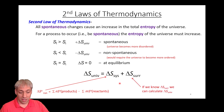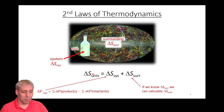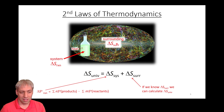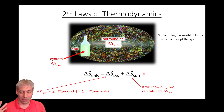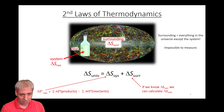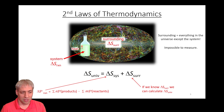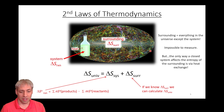Delta S of the surroundings gets more complicated. If we know the system and the surroundings, we can calculate delta S of the universe. The problem is if we define our system as a reaction flask exchanging heat but not matter, delta S of the surroundings gets really hard — that's everything else in the universe, and we can't measure the entropy of the entirety of that.